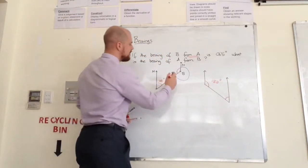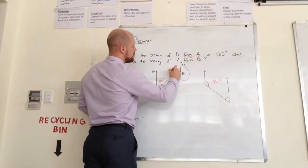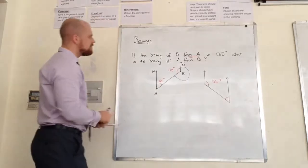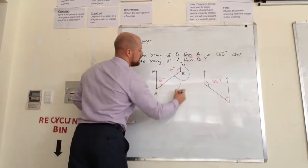Therefore, if that's 65, that must be 115. So if that's 115, I can therefore find the blue angle, which is the bearing.